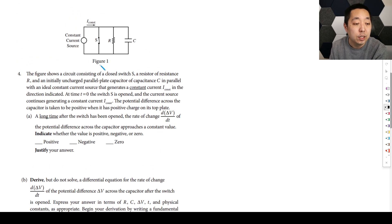So the figure shows a circuit containing a closed switch S of resistance R and an initially uncharged parallel capacitor. Uncharged means the charge is zero, which implies the voltage is zero on that capacitor initially. With an ideal constant current source. This is a current source. This means the current will be constant regardless of the voltage. A little bit different, but it's the same idea. We're still going to do the same circuit analysis. The potential difference across the capacitor is taken to be positive when it has a positive charge on the plate. So like this is going to be how we're going to do it.